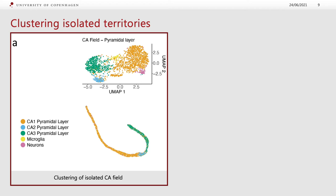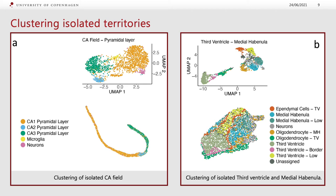These subtle differences are even more visible when we look at the third ventricle and the medial habenula. The medial habenula seems to be characterized by two distinct clusters in the UMAP projections, and both of these clusters are spatially distinct as well. This suggests that despite the fact that both clusters are enriched with markers associated to this tissue, there is a spatially driven expression difference between them. There is also a clear distinction between the lower third ventricle and the third ventricle itself, going as far as describing a third ventricle border layer between the third ventricle and the oligodendrocyte neighbors.